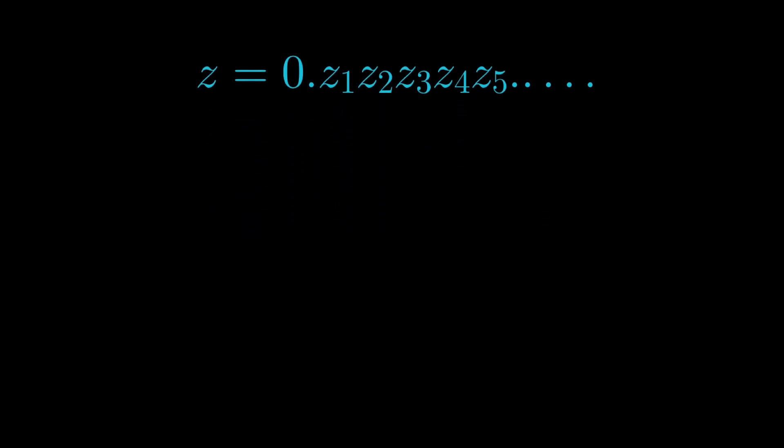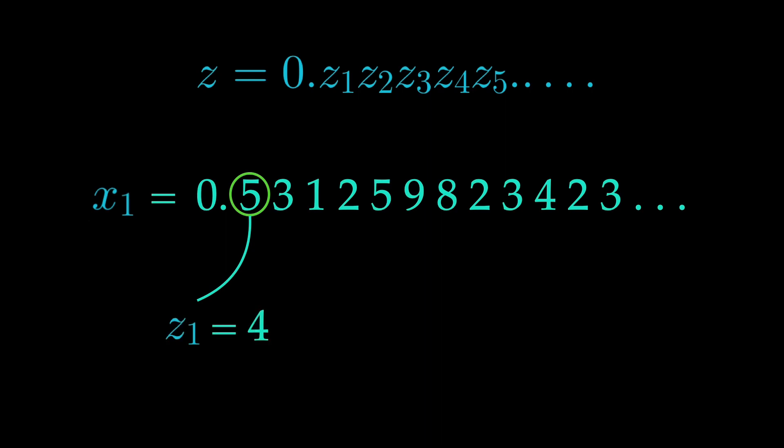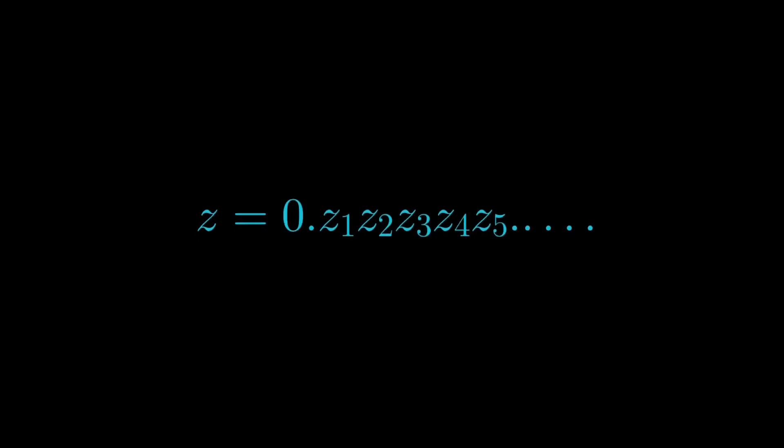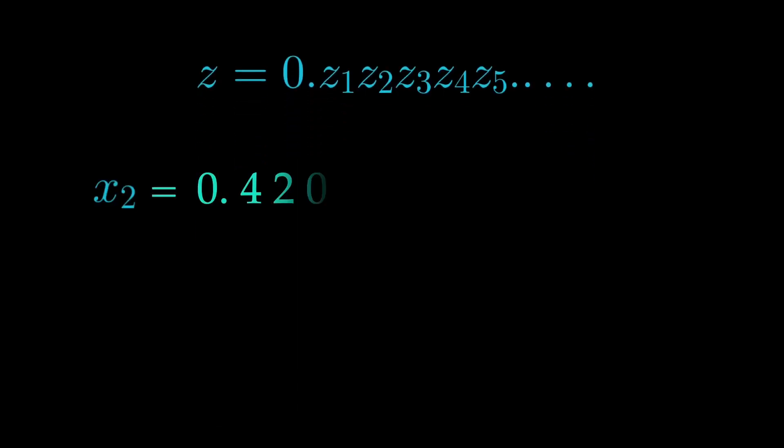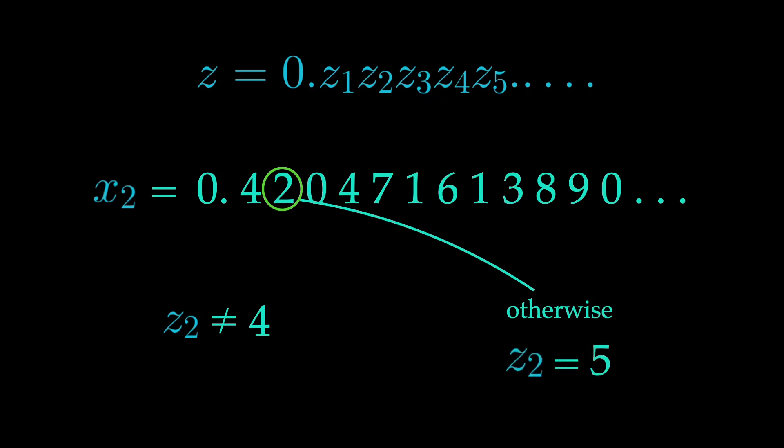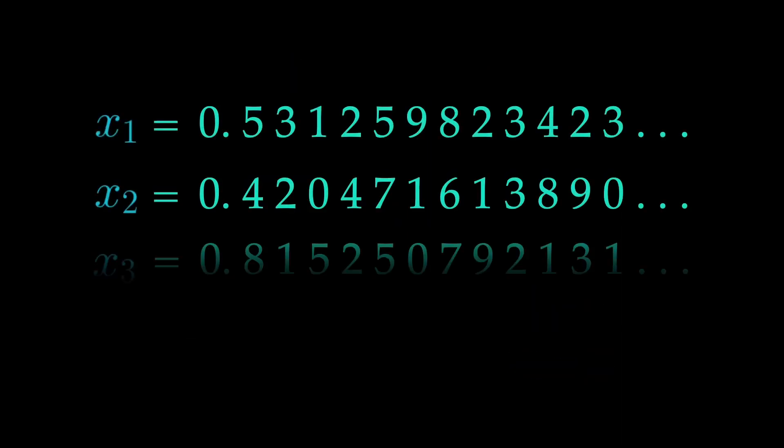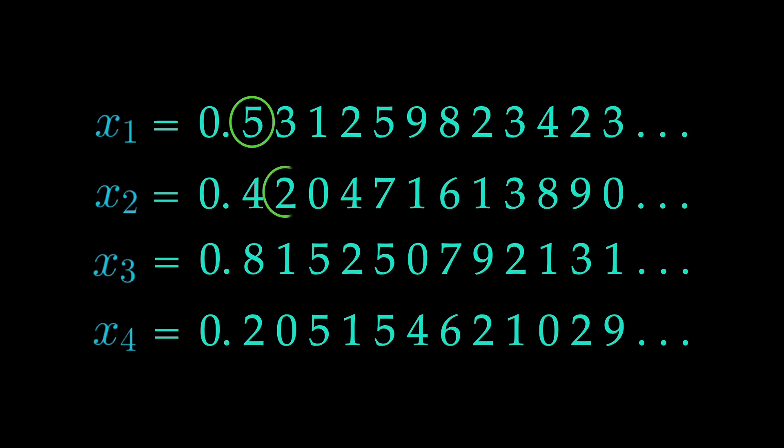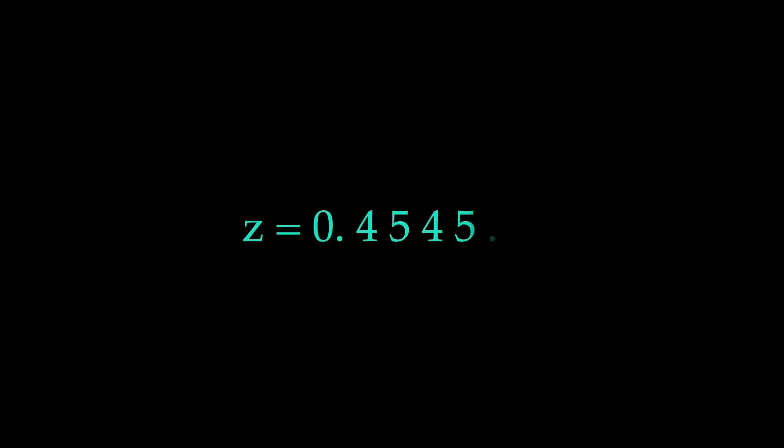For the first decimal, we look at the first element of our sequence. If the decimal of x1 is 5, then our decimal s1 will be 4. If it's not 5, then s1 will be 5. It doesn't have to be the number 5—you can choose any number between 0 and 9. Now let's construct s2 in a similar way. We take the second decimal of x2 and apply the same rule. If it's 5, then s2 is 4. Otherwise, s2 is 5. While we successively construct the decimals of s by diagonally going down the decimals of our sequence, we construct a completely new number that is not part of the sequence already.